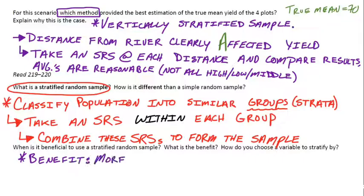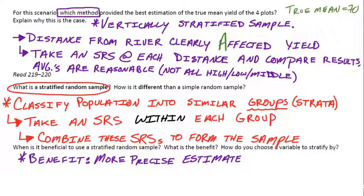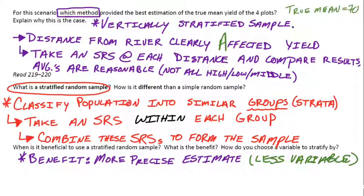The benefit is that it provides a more precise estimate. Precision here means the results are less variable. The other methods we could have used in the river activity — if we had done a totally random simple random sample — gave a lot more variability and weren't always a good representation of the yields.